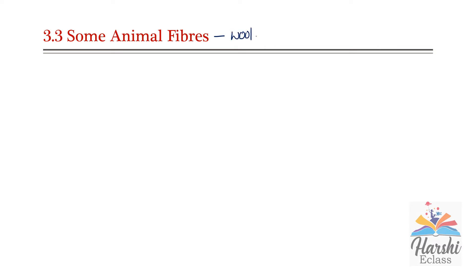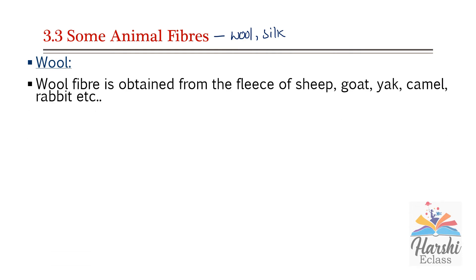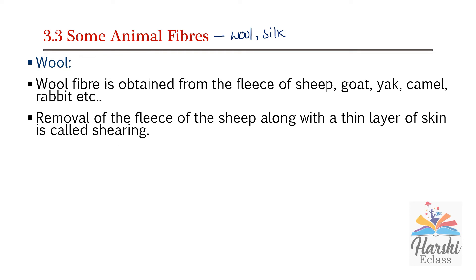Some animal fibers — examples are wool and silk. The entire process of collecting wool from sheep, and silk produced from silkworm, will be studied in detail in Class 7. Here is a short introduction. Wool fiber is obtained from the fleece of sheep, goat, rabbit, etc. Removal of the fleece along with a thin layer of skin is called shearing. This sheared hair is cleaned and washed in tanks to remove dirt, grease, and dust. That process is called scouring.